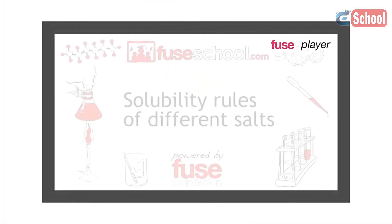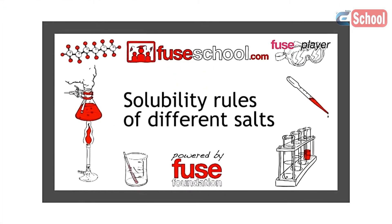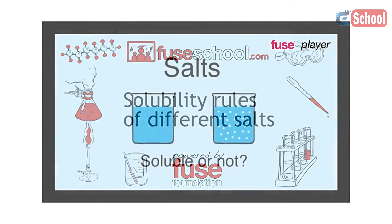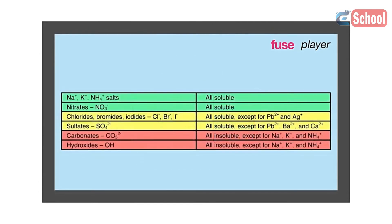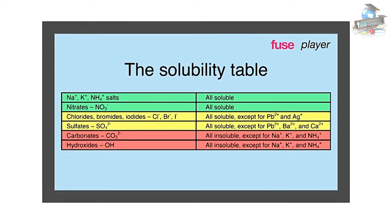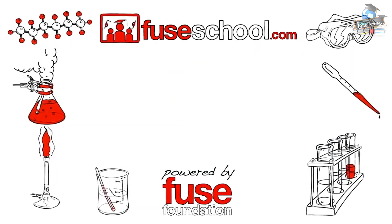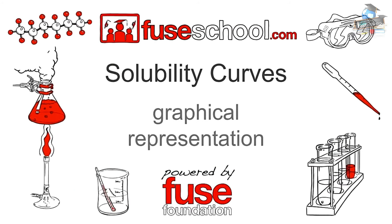We have learned about the solubility rules in a different lesson. These rules help us predict whether or not a salt is soluble in water. For salts that are soluble in water, some are more soluble than others at a given temperature. In this lesson we will learn about solubility curves, which is a graphical representation of the solubility of a certain salt over a temperature range.